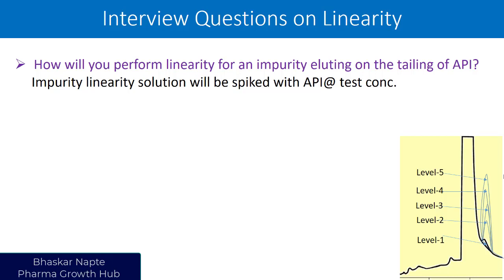Look at the chromatogram. These are the different concentration levels I have spiked into a solution. Does that solution contain only impurity? No — it also contains the API at its test concentration level. The concentration of API is not varied, because the API concentration is going to remain at its original concentration, let us say 1000 ppm. So what I need to do is make a solution of API at 1000 ppm, spike the impurity at concentration level 1, then run the chromatogram and understand the response of the impurity.